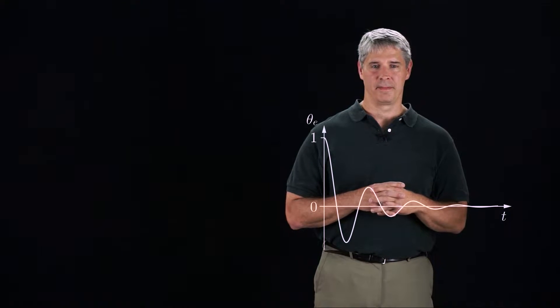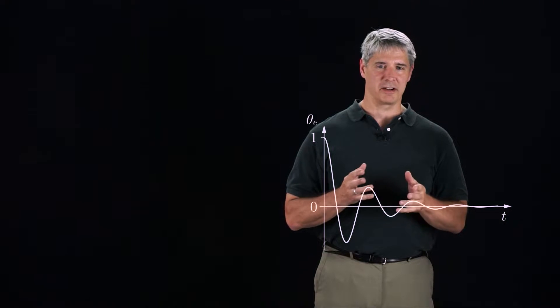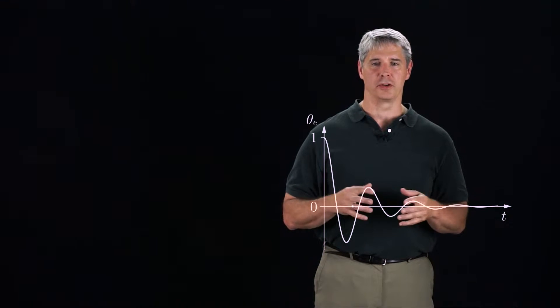The error dynamics describes the combined dynamics of the robot and the controller in response to a reference input. As we saw in the last video, an error response could look something like this. Here the error response has zero steady-state error and lots of overshoot and oscillation.